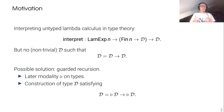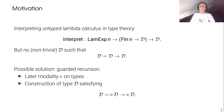A possible solution to this problem is using guarded recursion. Guarded recursion provides a new operation on types called the later modality, and it also provides a way to construct a type D that's equal to the function type from later D to later D. This turns out to be sufficient for an interpretation of the untyped lambda calculus in type theory.